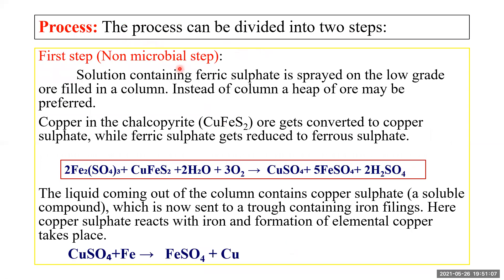The whole process of bio leaching of copper is divided into two steps — same as for uranium. Step one is the non-microbial step; step two is the microbial step. In the first step, a solution containing ferric sulfate Fe₂(SO₄)₃ is sprayed on the low-grade ore in a column. The low-grade ore chalcopyrite can be taken in the form of a heap — heap method is more practiced in the field. Ferric sulfate is sprayed over the heap.